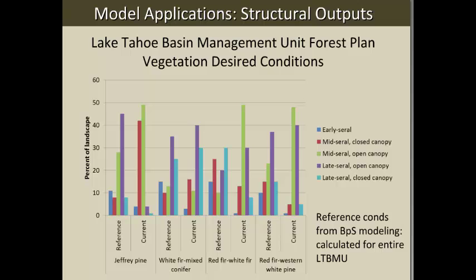We used these highly validated state transition outputs to provide desired conditions for seral stage distributions on large landscapes in the Lake Tahoe Basin Management Plan. For the whole Lake Tahoe Basin with four different forest types, we built reference conditions from the models and compared to current conditions — the proportions of landscapes occupied by five different seral stages — giving an idea of what kinds of management would represent restoration of vegetation structure. This work was done at watershed scales of roughly 10,000 to 30,000 acres and has been used to highlight landscapes requiring this kind of restoration work.